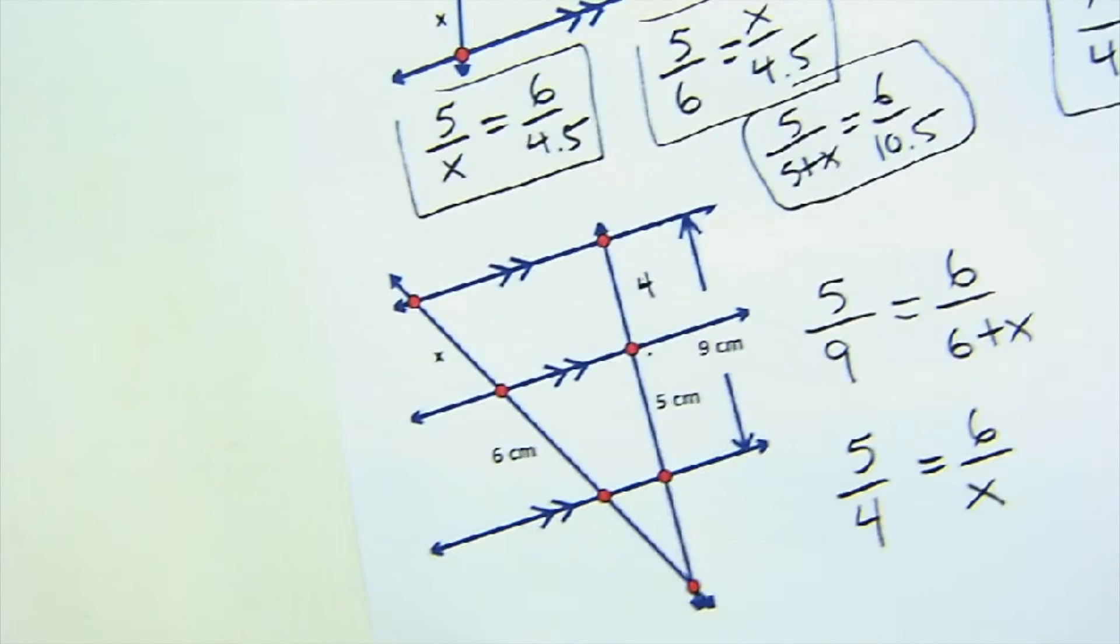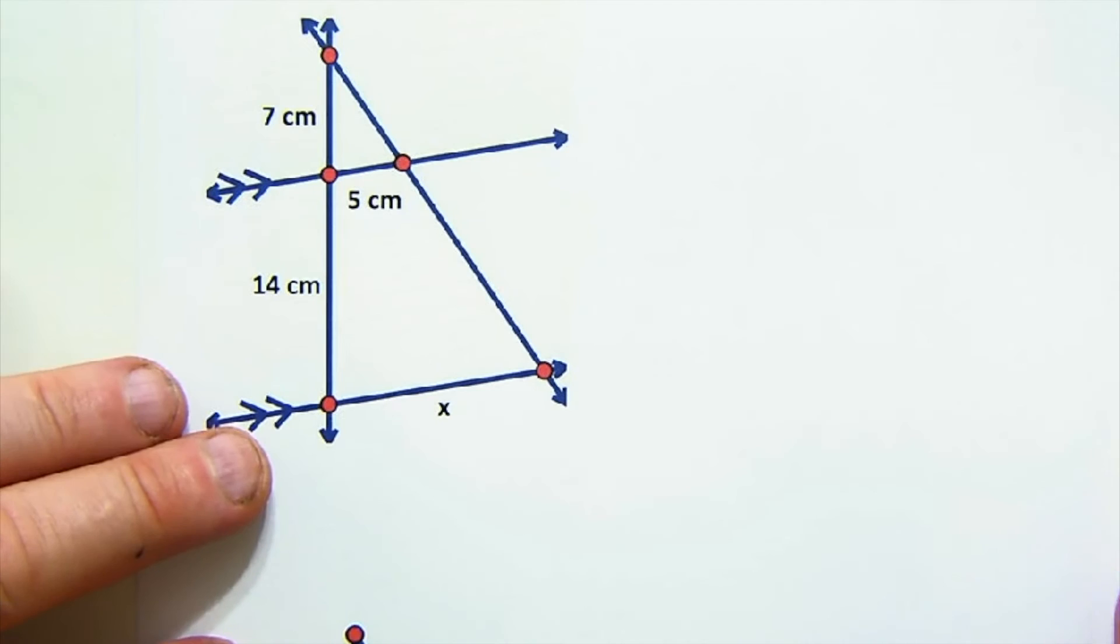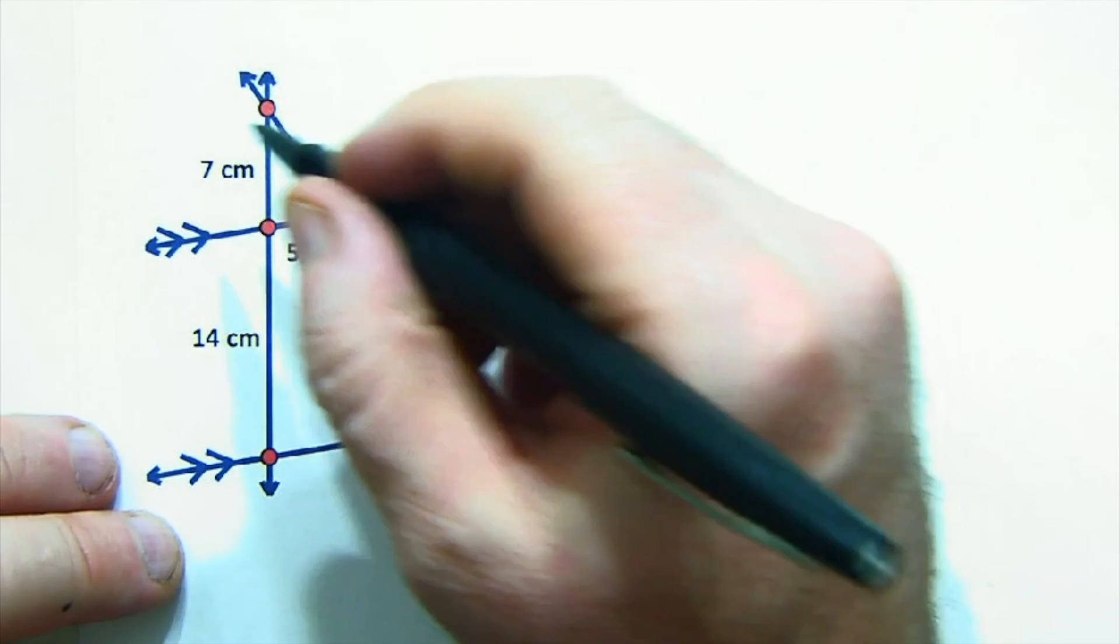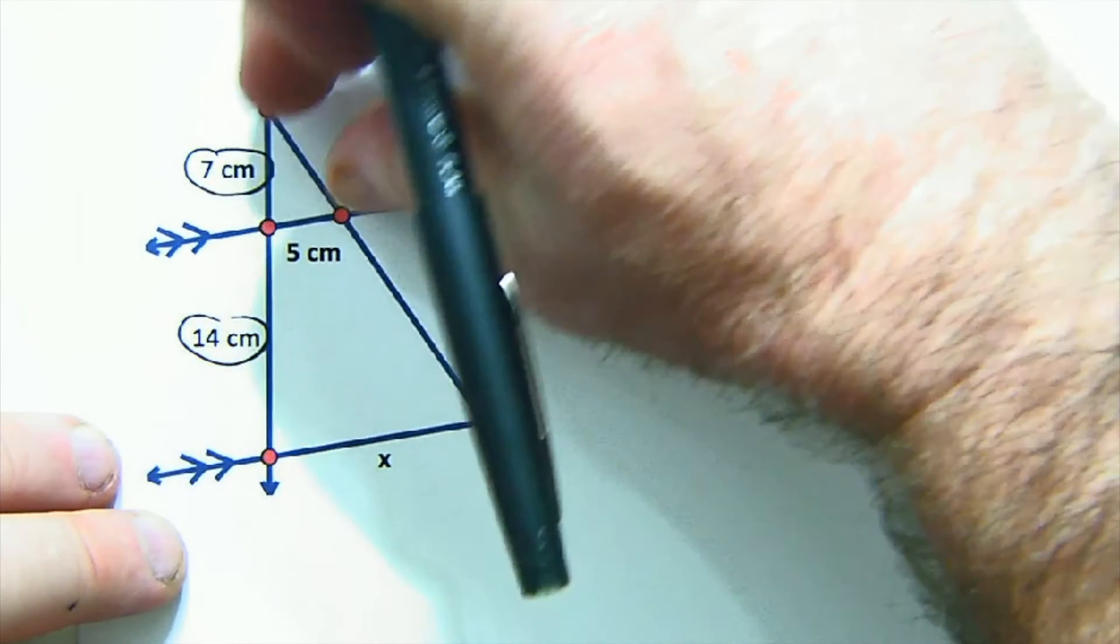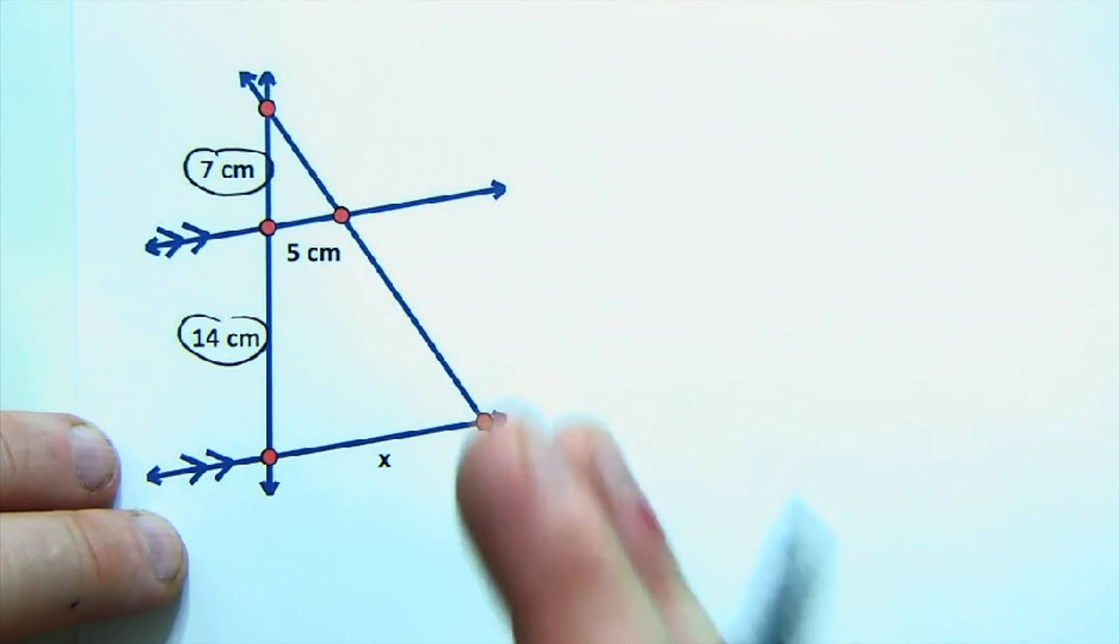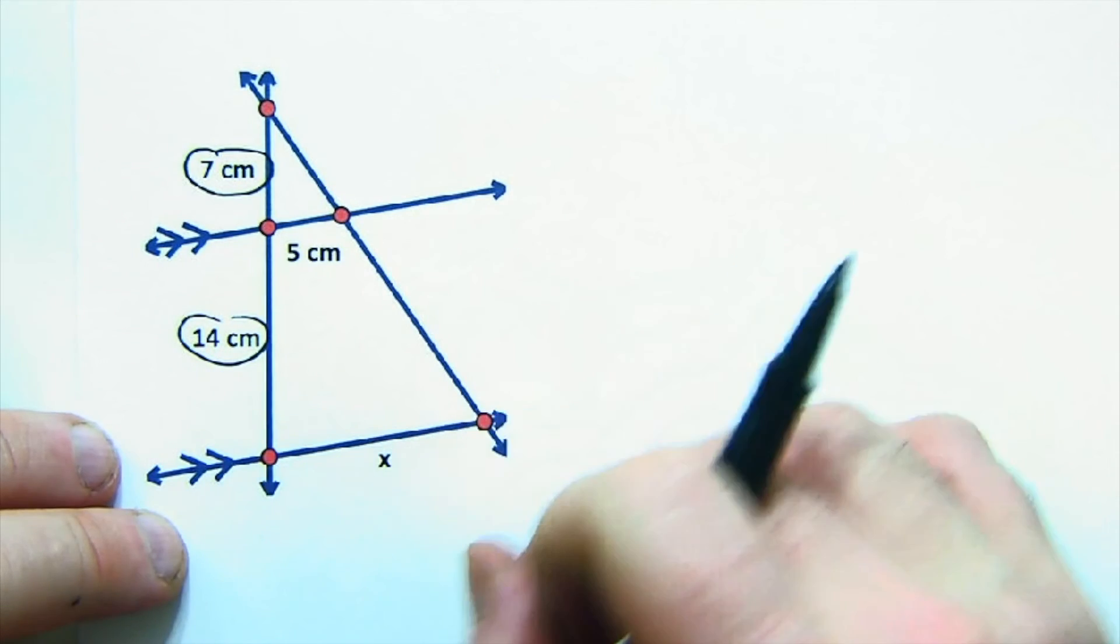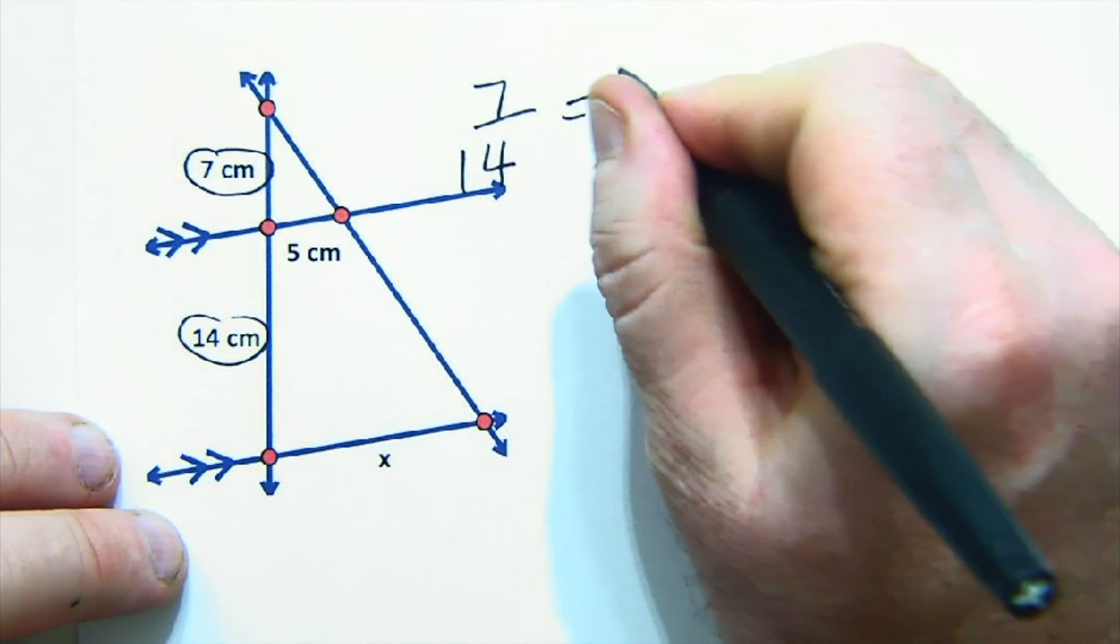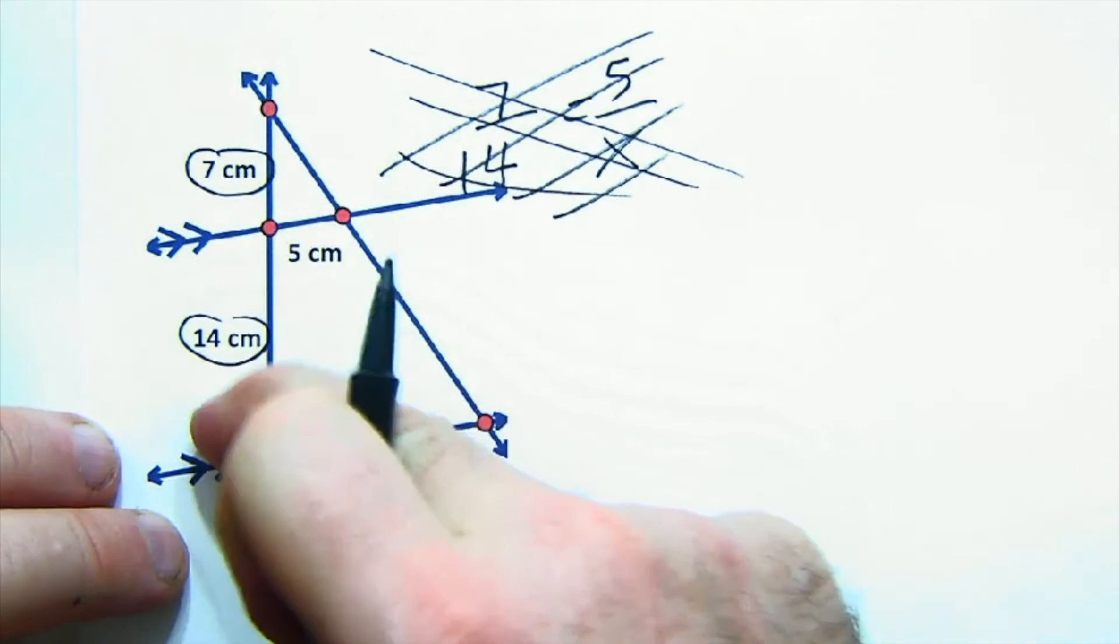Here, notice now this is the classic problem. I don't know how many times I can say this, but notice that the 7 and the 14 are pieces and they would relate to the pieces across. The 5 and the X are not pieces, they are not pieces. They are whole sides. So you can't go 7 to 14, 5 is to X. Don't, don't, don't, don't, don't tell me 7 is 14, 5 is to X.